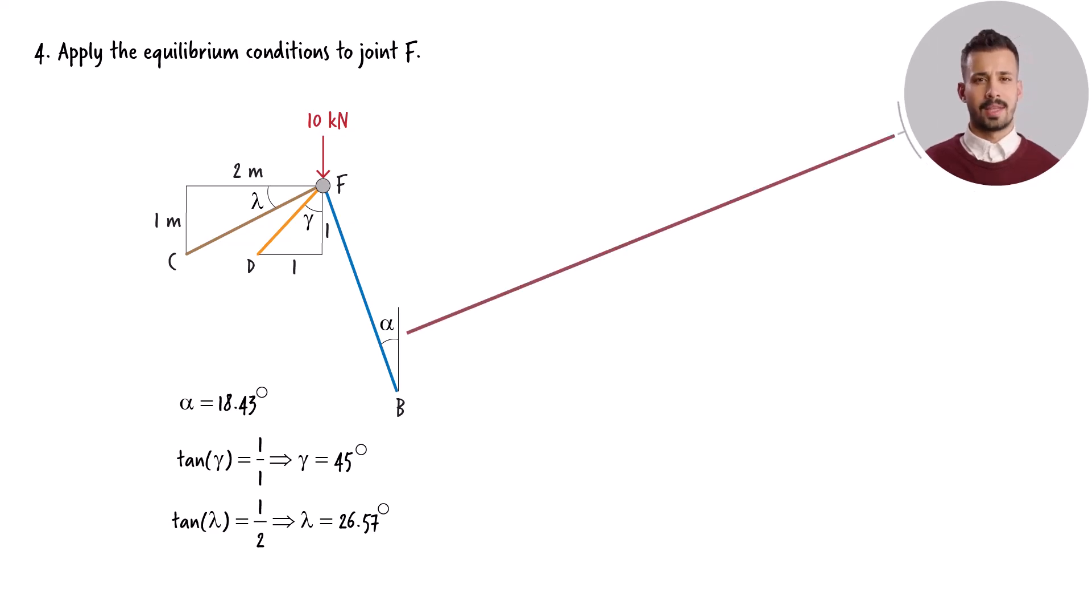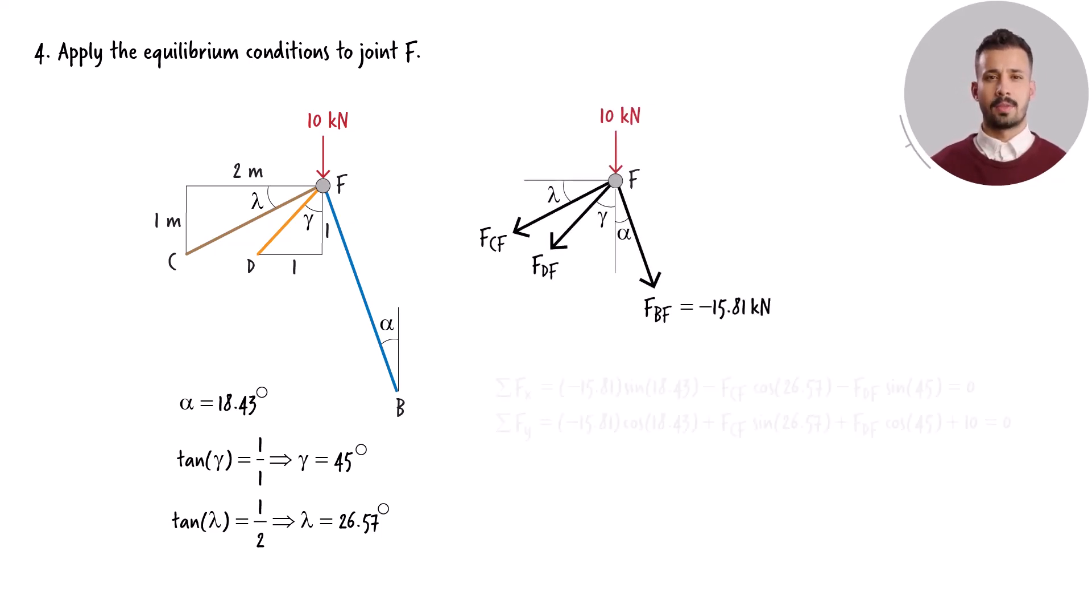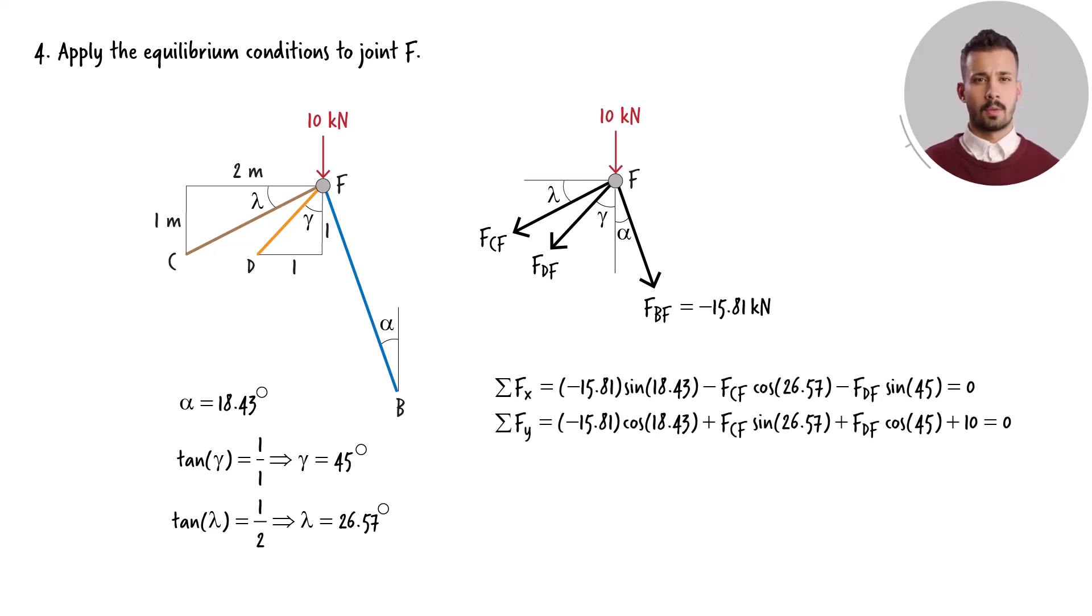The inclination angle for member BF is already known. For the other two members, their inclination angles are deduced from the truss's geometric configuration. Specifically, member DF forms a 45 degree angle with the vertical, while member CF is inclined at 26.57 degrees relative to the horizontal axis. Here is the free body diagram for the joint, from this we derive the equilibrium equations. By resolving these equations, we determine the unknown forces acting in members CF and DF.